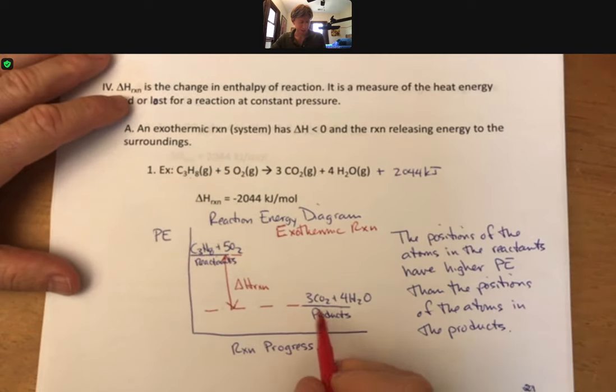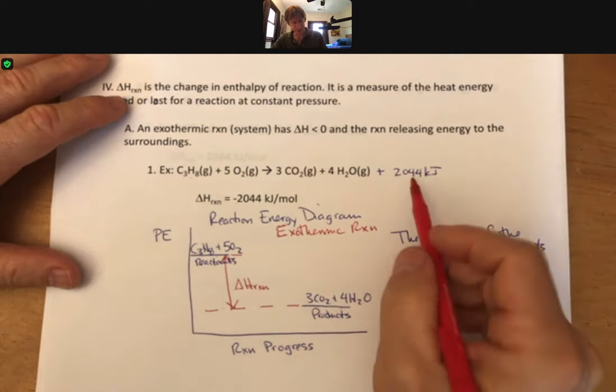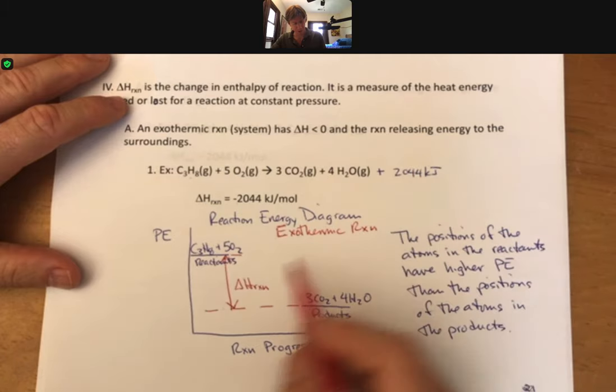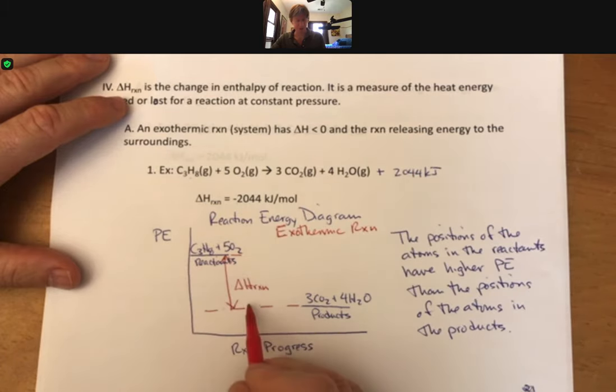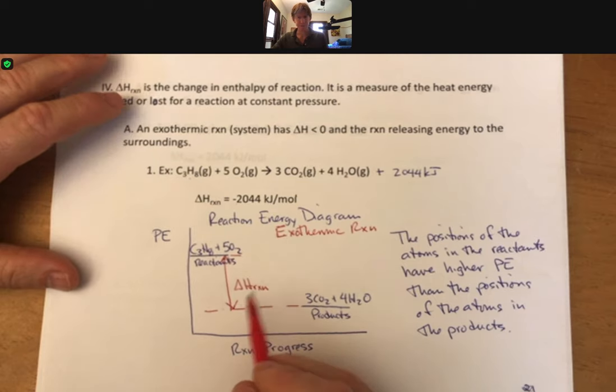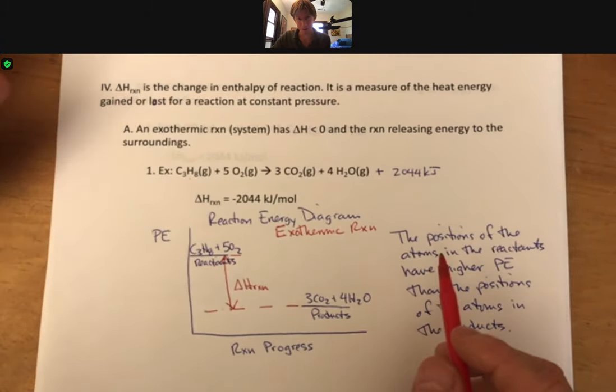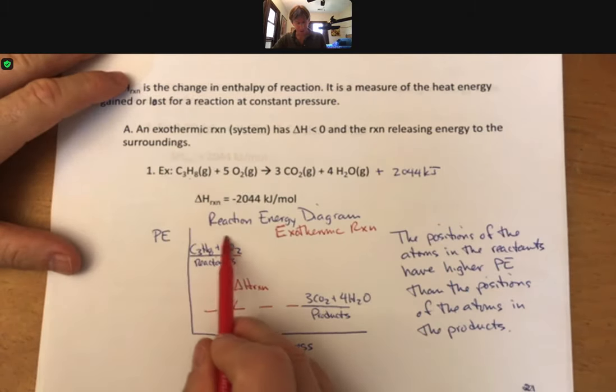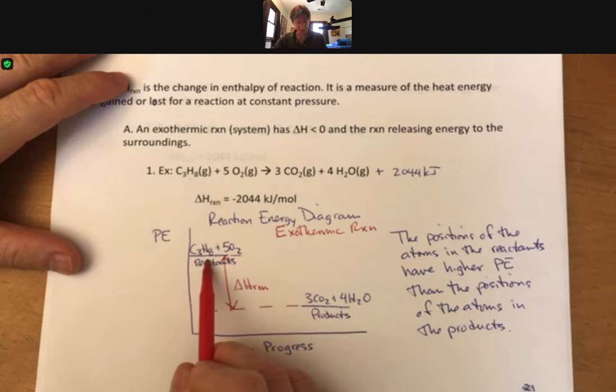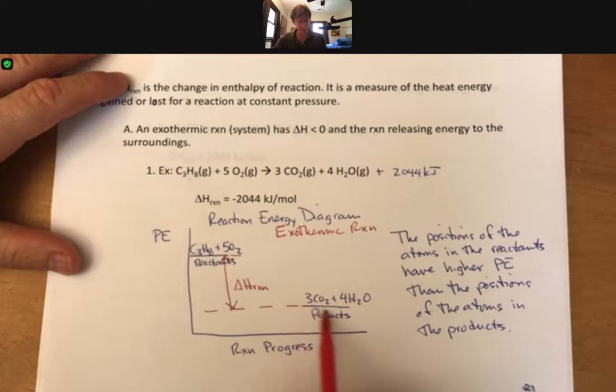The difference here in height is actually equal to delta H reaction. And that means that this number 2044 kilojoules is the difference in potential energy between these two. And just to be clear, or attempt to be clear, these reactants, these six things I guess, have more potential energy than these.